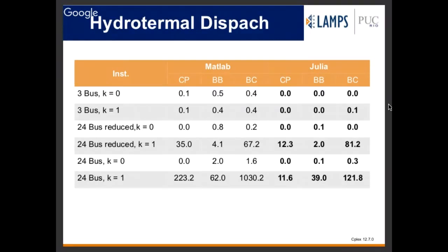Another problem is a hydro dispatch problem with integer variables, using mixed-integer rounding cuts — not a very good initial implementation, just a cutting-plane branch-and-bound algorithm. The first implementation was in MATLAB, the second in Julia. For small instances the time is close, but for larger instances MATLAB can be 10 times slower than Julia. These are initial codes for both.